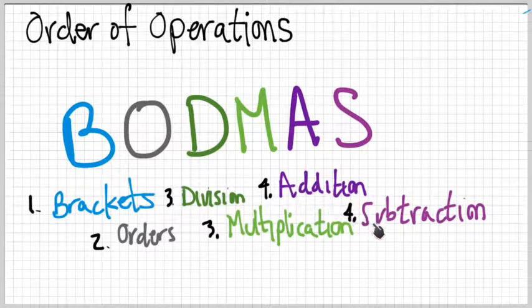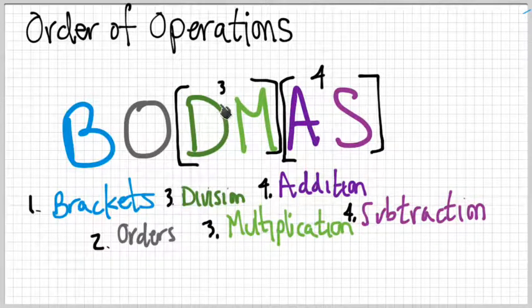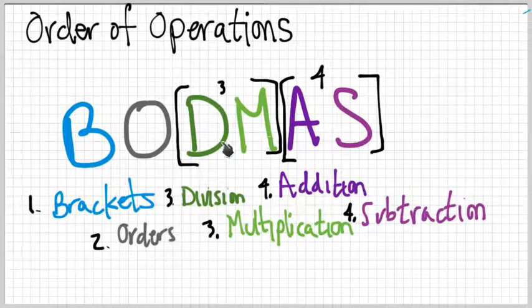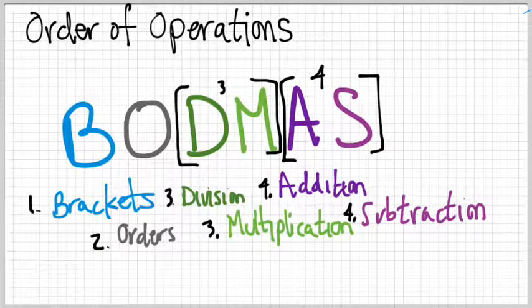And then any addition or subtraction. They can go in either order. That's why I've labeled them both number four. So you can sort of think of division and multiplication, whichever one comes first, basically. And then same thing with addition and subtraction. So basically, that's all there is to it.